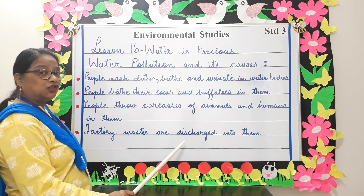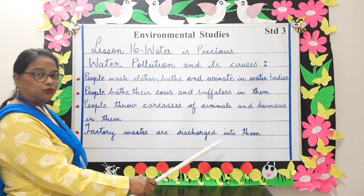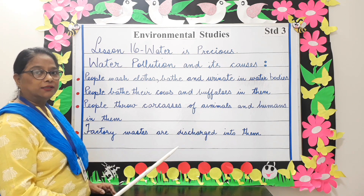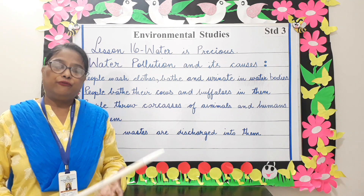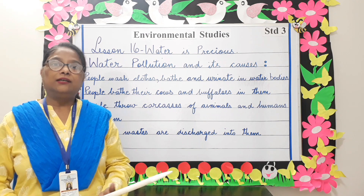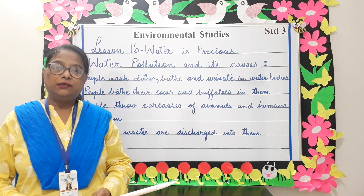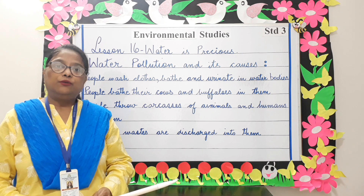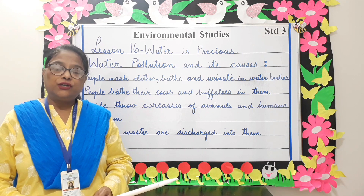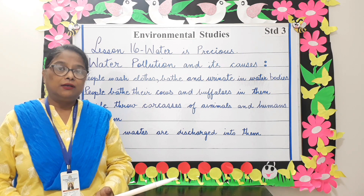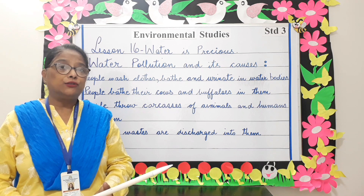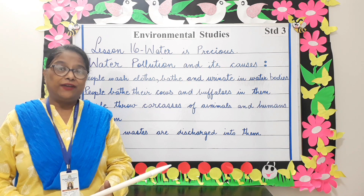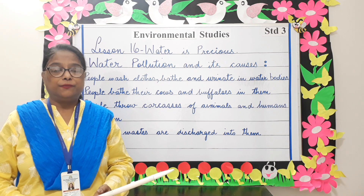Factory wastes are discharged into water bodies. If we drink dirty water, it causes diseases such as jaundice and cholera. Aquatic animals are also affected by this dirty water.